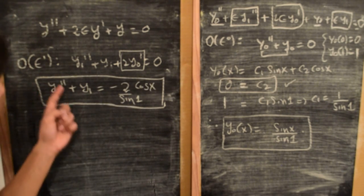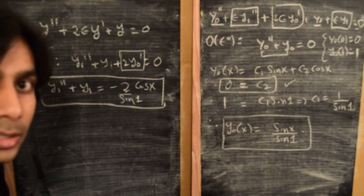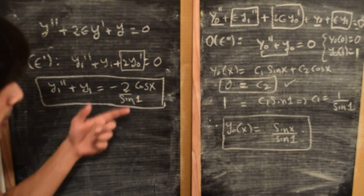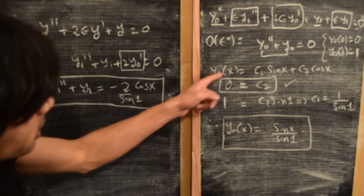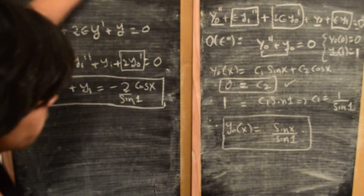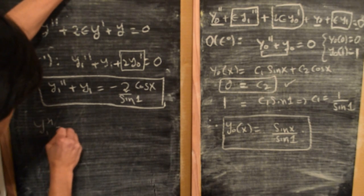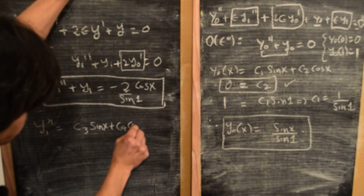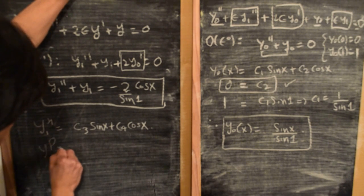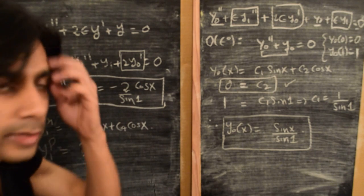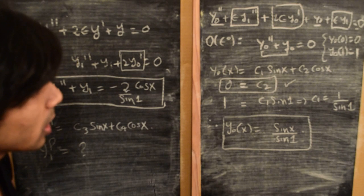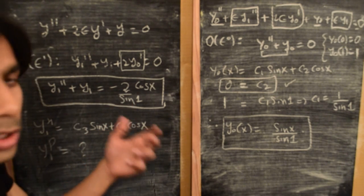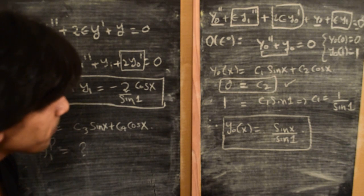This is a linear second order ODE in y₁ subject to the forcing −2cos(x)/sin(1). The overall solution is a superposition of the homogeneous solution plus a particular solution due to the forcing. The homogeneous solution is of the form y₁_hom = c₃·sin(x) + c₄·cos(x). We need to find the particular solution subject to this forcing. We'll use the method of variation of parameters, since we already know the homogeneous solutions.